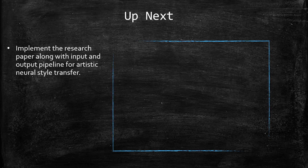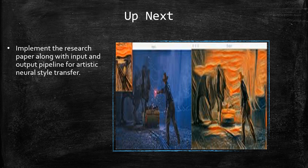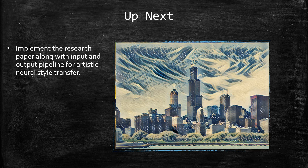In the next video, we'll implement the research paper along with the full input and output pipeline for artistic neural style transfer and produce results like the examples shown. I hope you understood the basic gist of the research paper. This is a really amazing technique and I've played around with it a lot — I think you'll enjoy it too. Stay tuned for the next one, and if you have any doubts or want me to cover any other topic, write it down in the comments below.